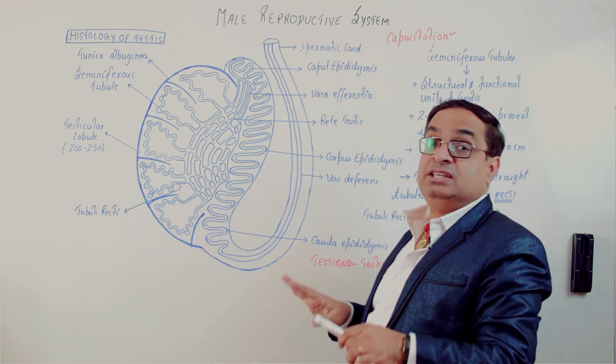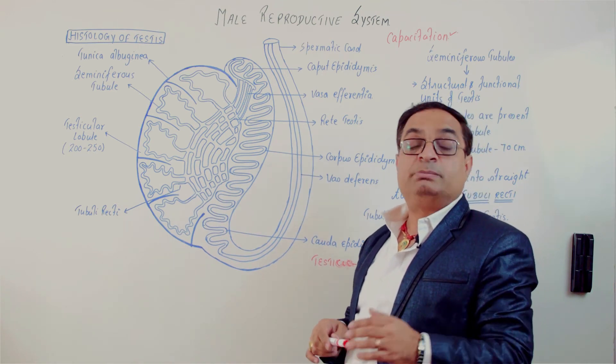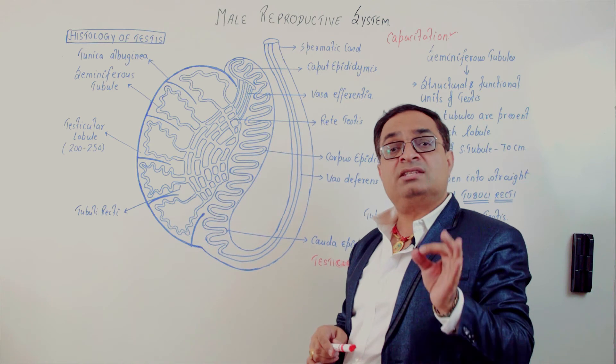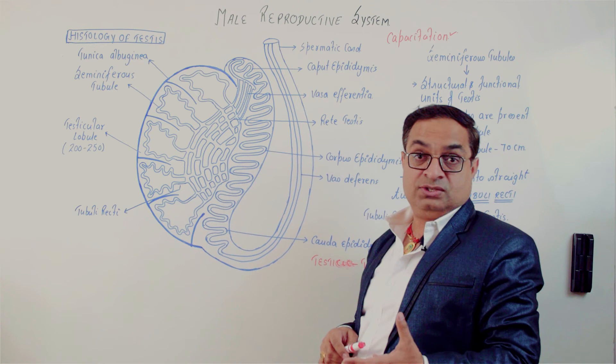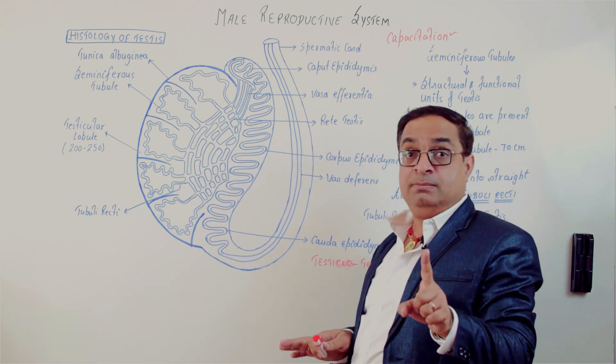Though the motility is acquired in epididymis, yet sperms don't move on their own. Sperms move on their own once they are ejaculated from the male body and they are exposed to the high oxygen content. Till the time they are inside the male reproductive system, sperms do not move on their own.